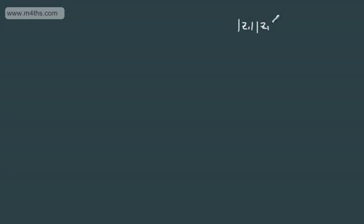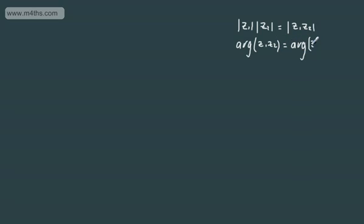Now, if we just consider the following, we can write some properties of complex numbers, and whilst it seems a bit theory-heavy to introduce it now, you'll see some of the benefits later. The absolute value of the modulus of Z1 multiplied by the absolute value of the modulus of Z2 is the same as the modulus of the product Z1 Z2. That is one of the properties of complex numbers. Also, if we have the argument of Z1 Z2, we can write this as arg Z1 plus arg Z2.